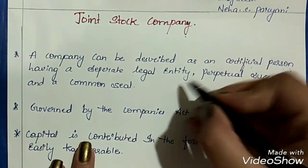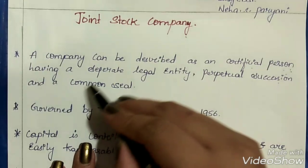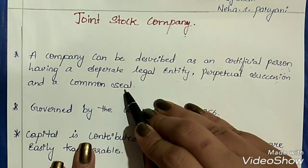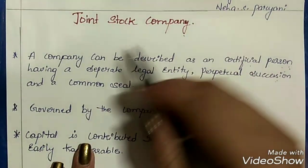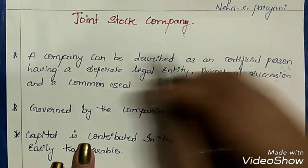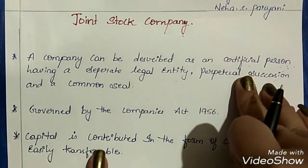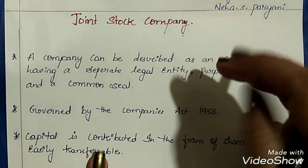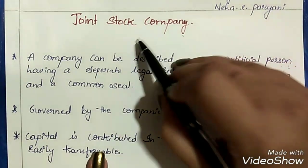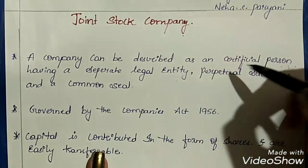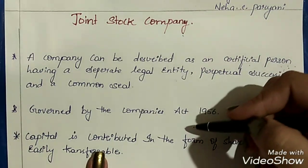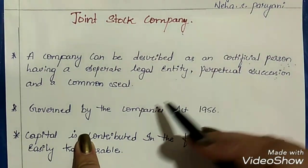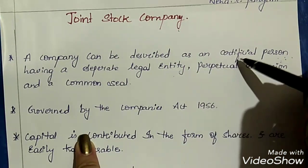A company can be described as an artificial person having a separate legal entity, perpetual succession and a common seal. There are four aspects in this definition. First, a company is an artificial person. According to law, this type of company is treated as an artificial person because registration is compulsory. They have their own name, brand, goodwill, reputation, etc. So in the eyes of law, the joint stock company is treated as an artificial person.